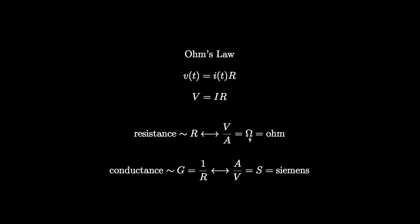Sometimes it's more convenient to think about the way a resistor converts a voltage to a current. For those situations, we associate a resistor with something called conductance, often using the symbol G where we use R for resistance. Conductance is the reciprocal of resistance. Its units are amps per volt, which are called Siemens, using the capital S to signify those units.